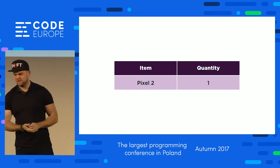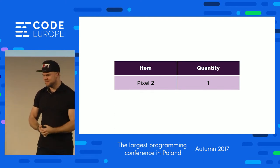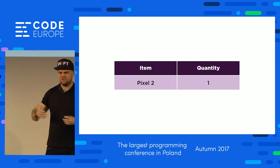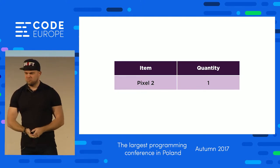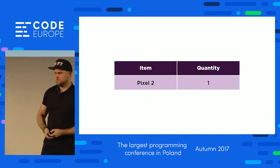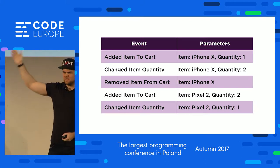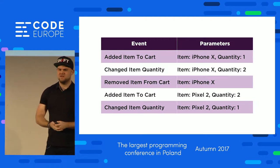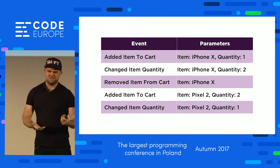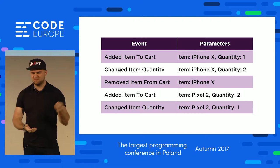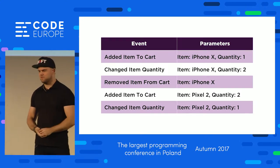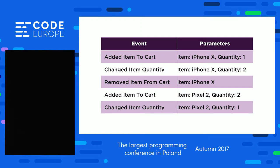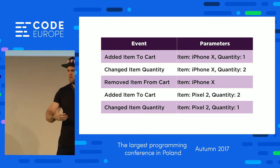Imagine you've got a cart system. You have a database with line items: an item and a quantity. In a traditional CRUD application, we've lost a lot of the intent — we don't know how the user got to this state. What we really need is an event stream with events and parameters showing what happened along the way. We can see this user added an iPhone to their cart, decided they wanted two, then decided to give Google a go, deleted the iPhone, added a Google Pixel, and then decided it was too much to spend on two at once, so bought just one.